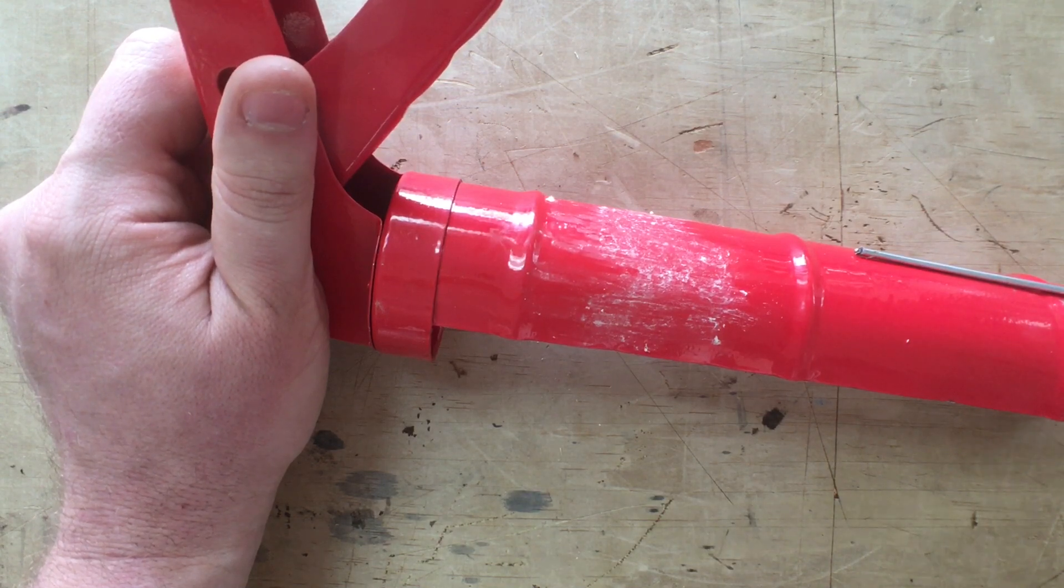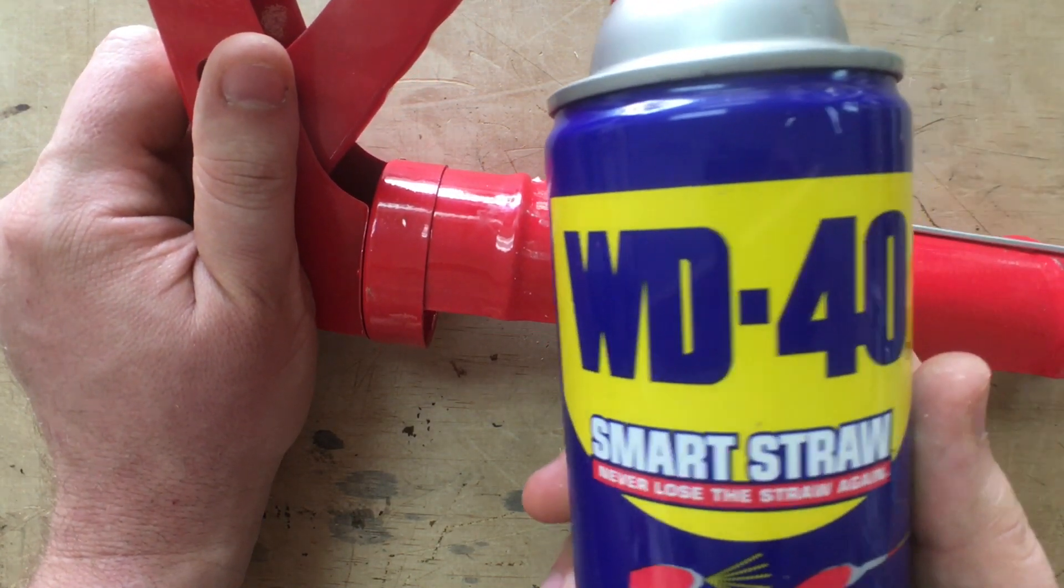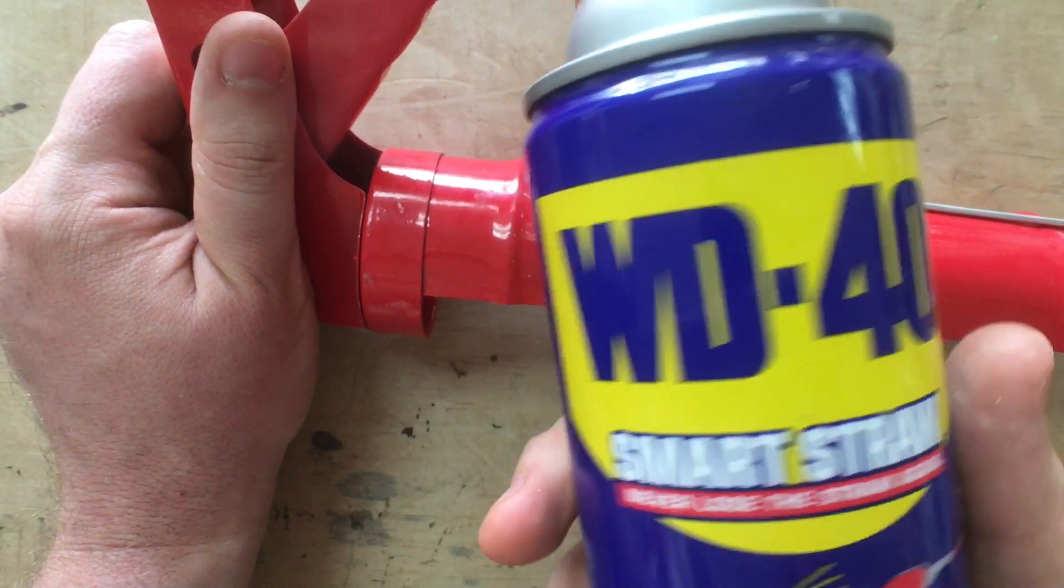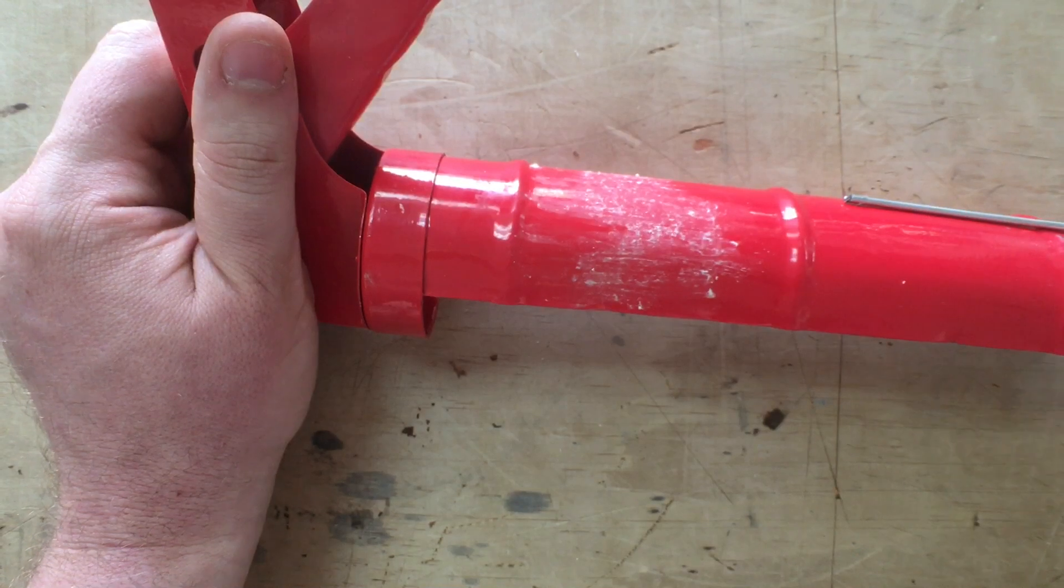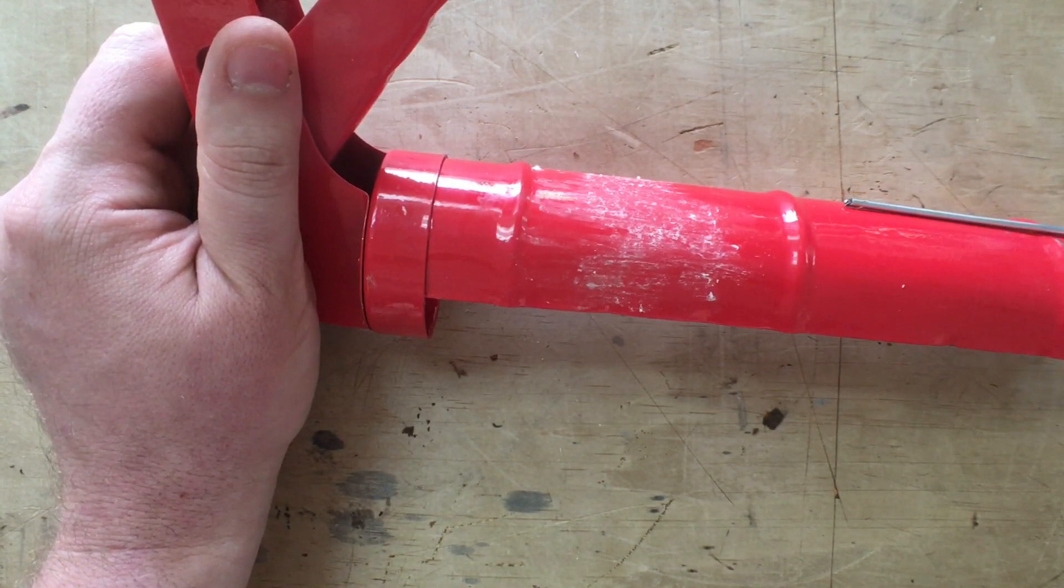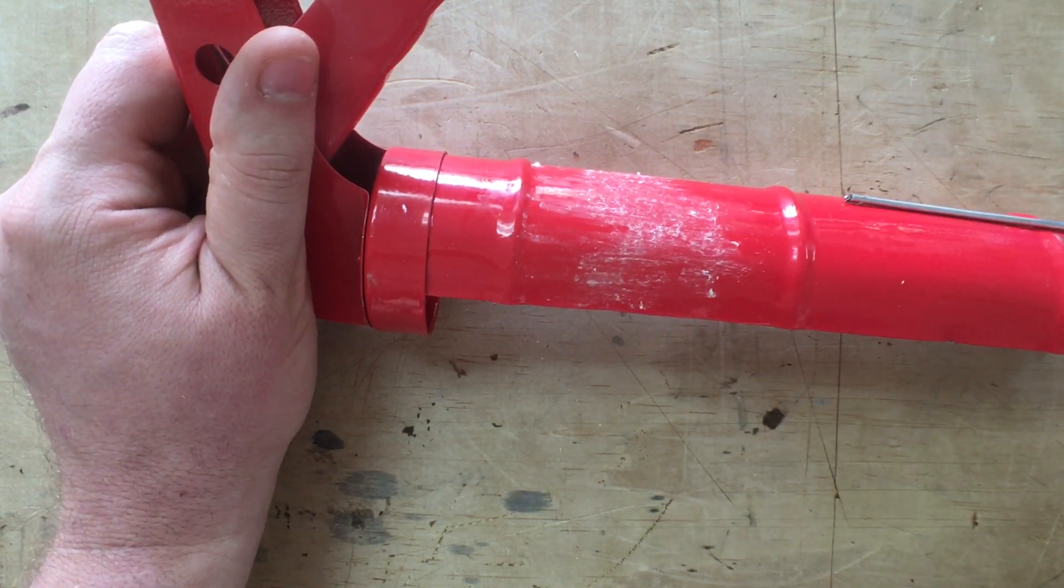And there's a regular old everyday household product that excels at taking this stuff off, and that is good old WD-40. I don't use WD-40 very often. Removing stickum is about the only thing I use it for. I generally prefer to use purpose-built lubricants and greases, but for removing stickum, really nothing beats WD-40.